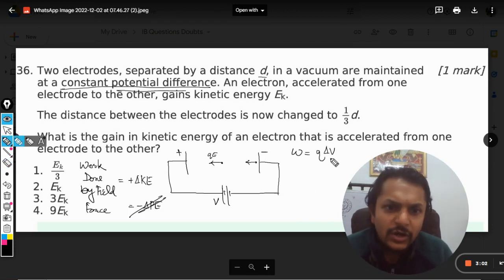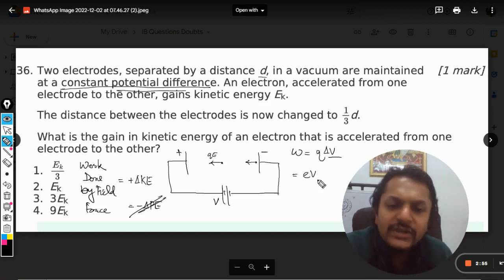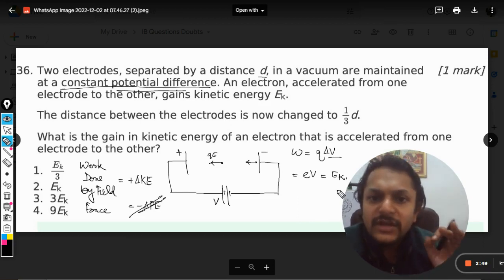Now because the potential difference is not changed and the charge is the electron, so it will become e into V. So this is equal to the kinetic energy Ek. So this is the first case.